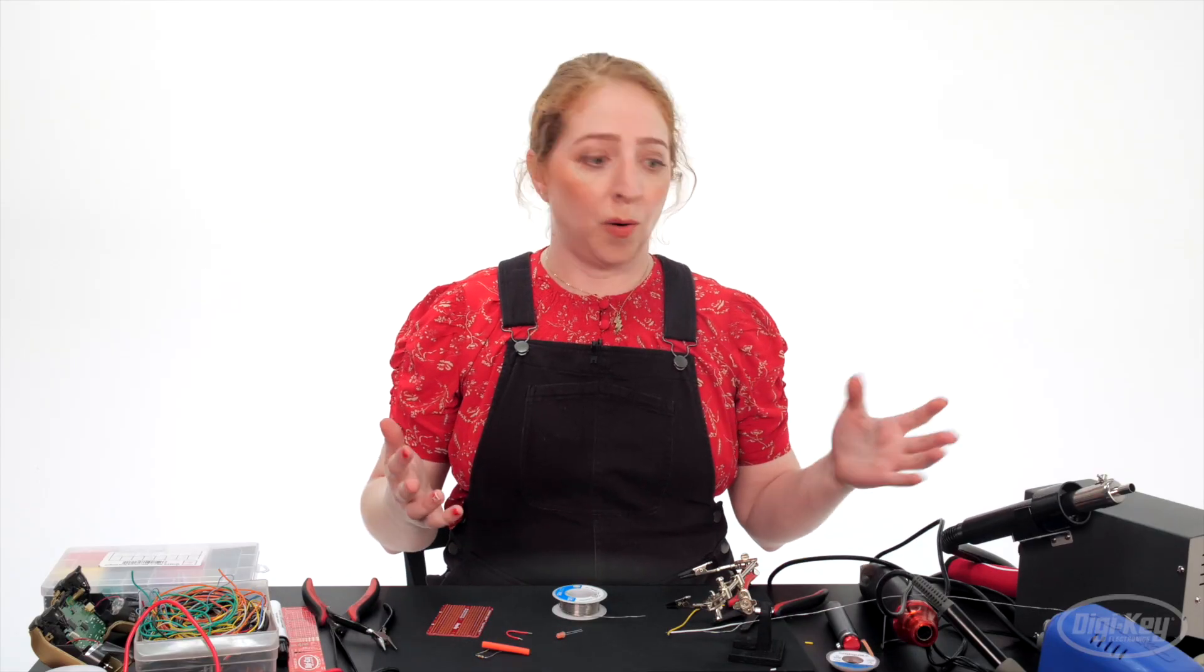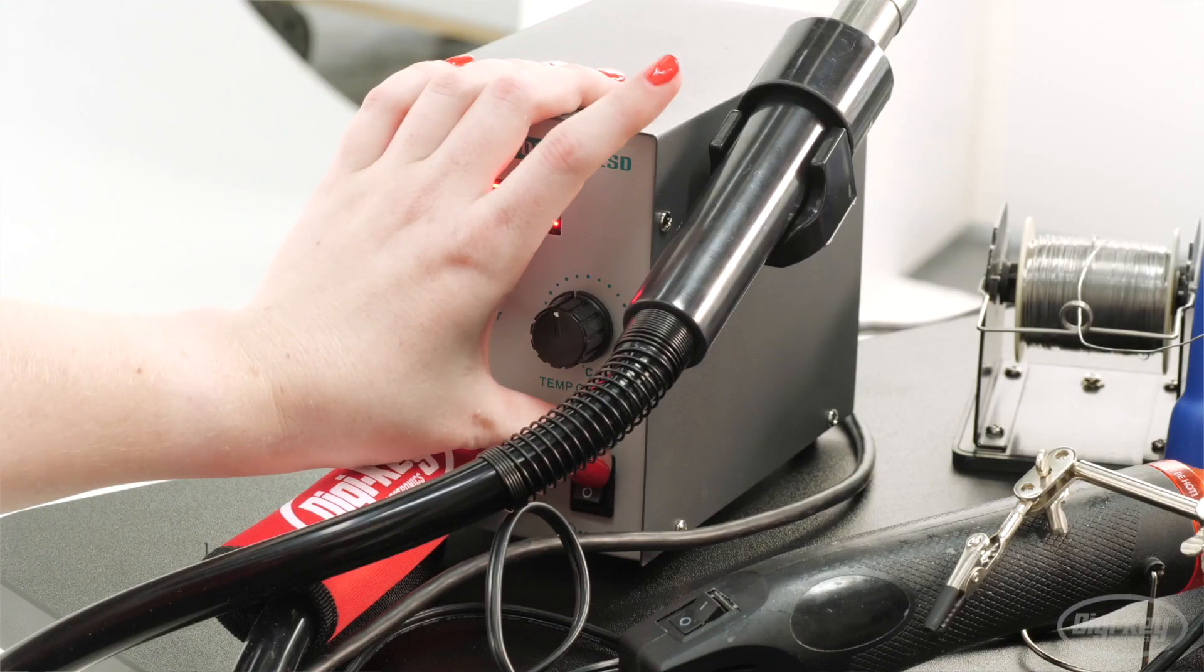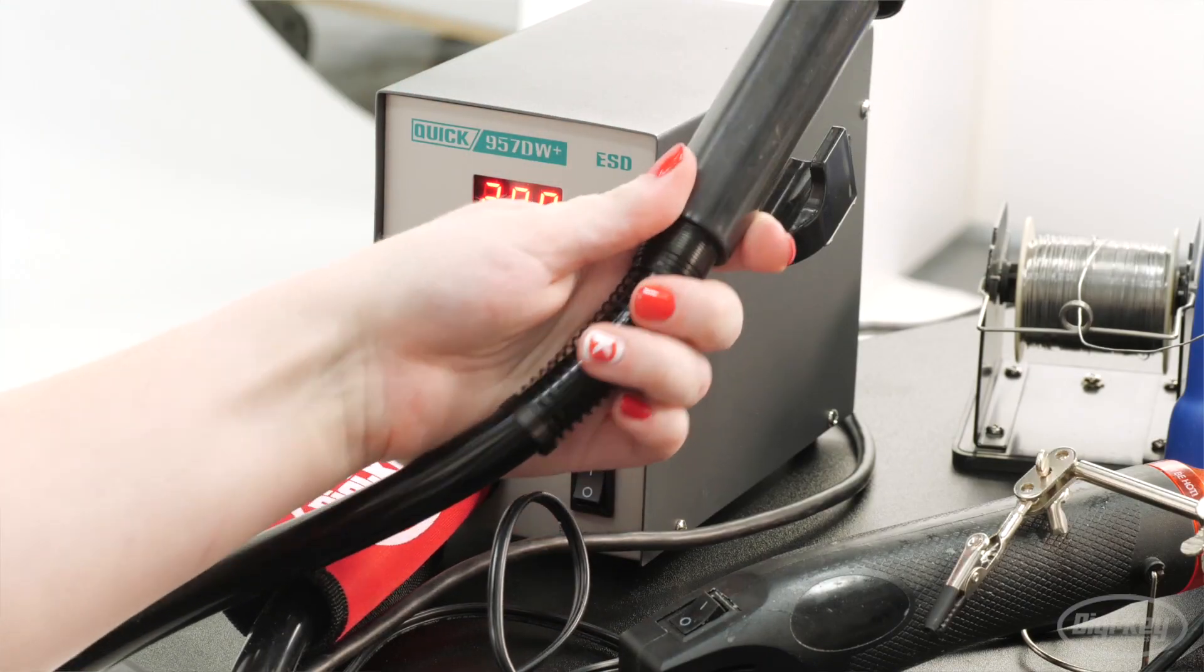To remove surface mount components, a hot air rework station can heat up the small pads that are inaccessible to a soldering iron.